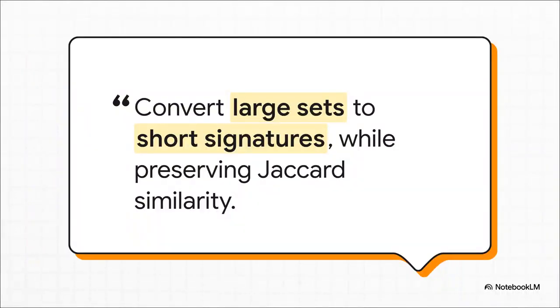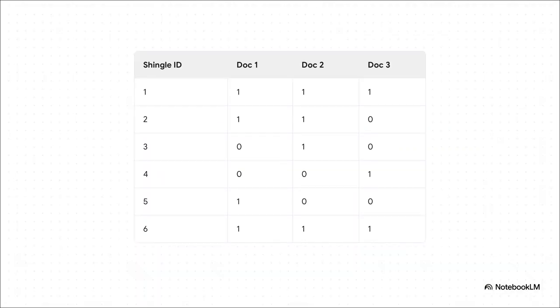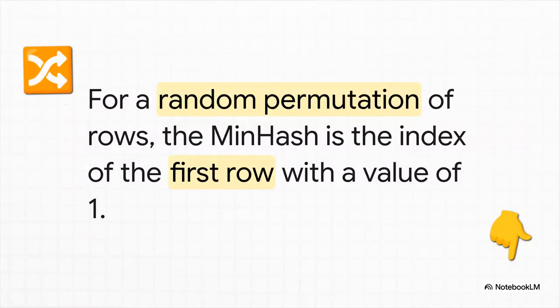But here's the next big challenge. These sets of numbers can still be massive. So the question becomes, how can we shrink these huge sets into really short signatures or fingerprints without losing that crucial Jaccard similarity information? To really get this next part, let's visualize it. Imagine a giant grid, like a spreadsheet. Every single unique shingle that exists in any of our documents gets its own row, and every document gets its own column. Then we just go through and put a one in a cell if a document contains that row's shingle. What you end up with is this huge matrix that represents our entire collection.